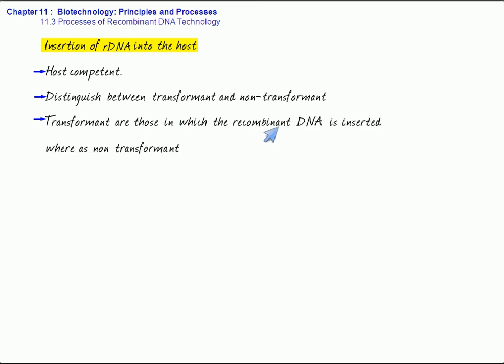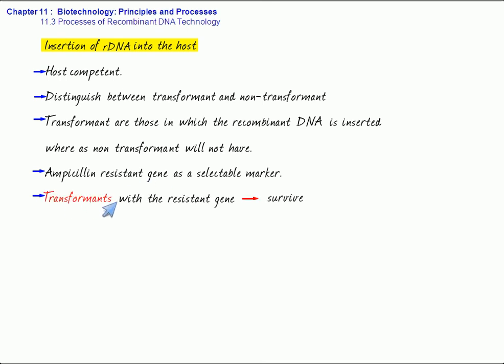You already know that transformants are those into which the recombinant DNA is inserted, whereas non-transformants will not have. So, how do you distinguish between the two? For this, we can identify any selectable marker gene. Suppose we are considering ampicillin-resistant gene as a selectable marker. So, if the recombinant has the ampicillin-resistant gene as a marker in the transformant, and if now we place on agar plates with ampicillin, then obviously the transformants with the resistant gene will survive. The non-transformants, which do not have the ampicillin-resistant gene, when they are placed on the agar plates, these are going to die.